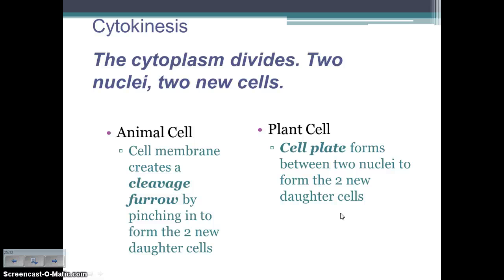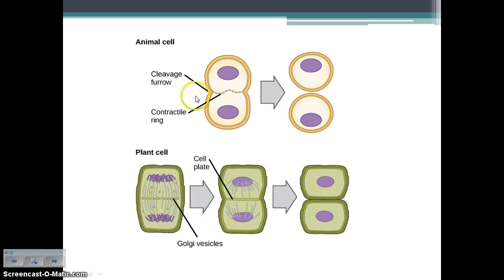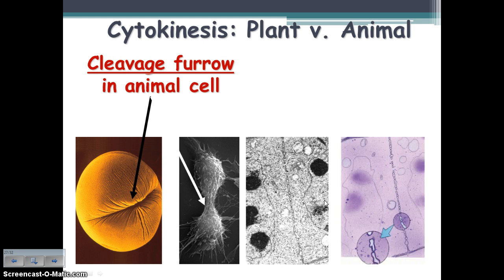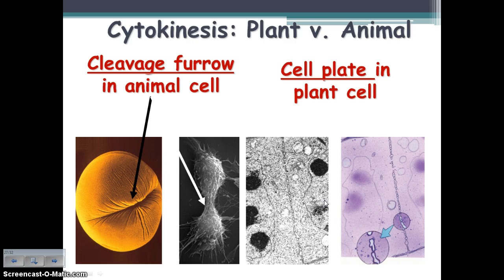In cytokinesis, the cell membrane pinches in in an animal cell, creating what's called a cleavage furrow. In a plant cell, there's a cell plate that forms between the two nuclei. The cytoplasm is cut and now we have two complete daughter cells. There is a difference in how that happens: animal cells have the cleavage furrow; plant cells have the formation of a cell plate, which eventually becomes the cell wall. That's why plant cells look like little bricks.